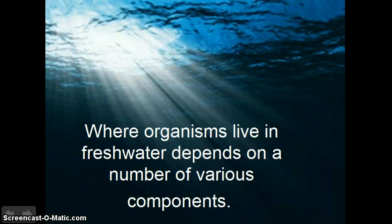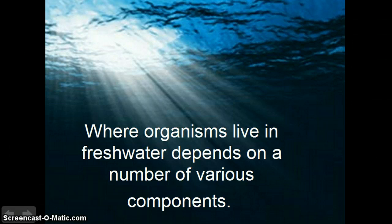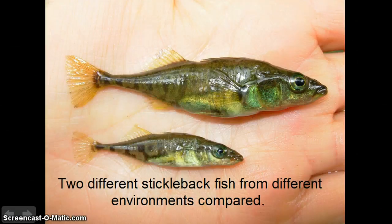In freshwater environments, the variety and quantity of organisms depend on how far sunlight reaches down into the water, how many nutrients are in the water, how deep the water is, how fast or slow the water is moving, and the oxygen level of the water. Some organisms can live in all or any mix of these factors.